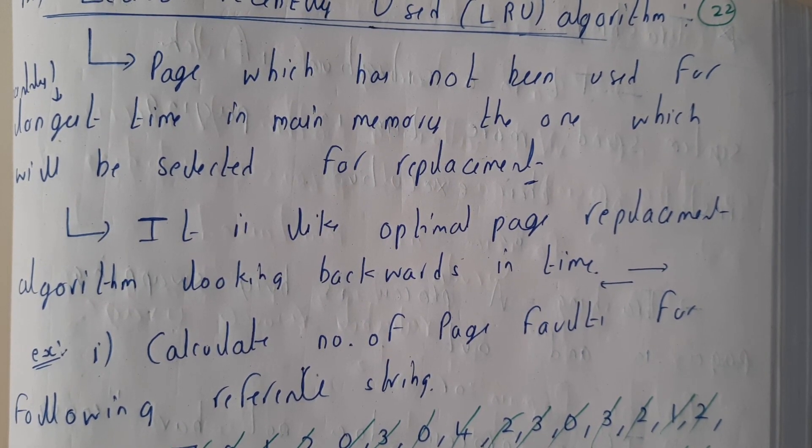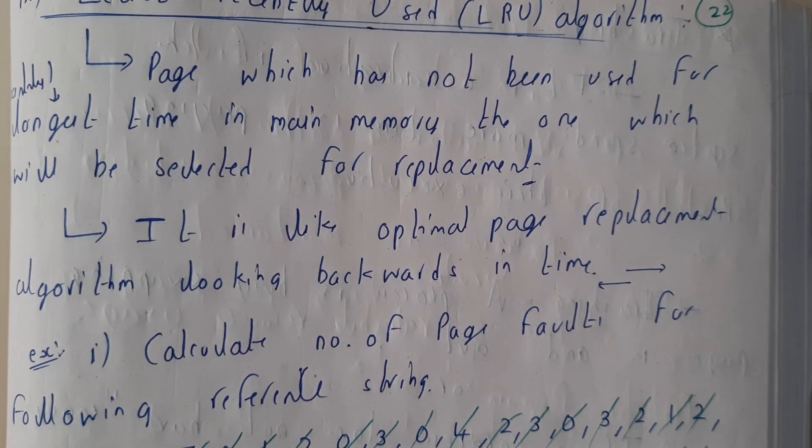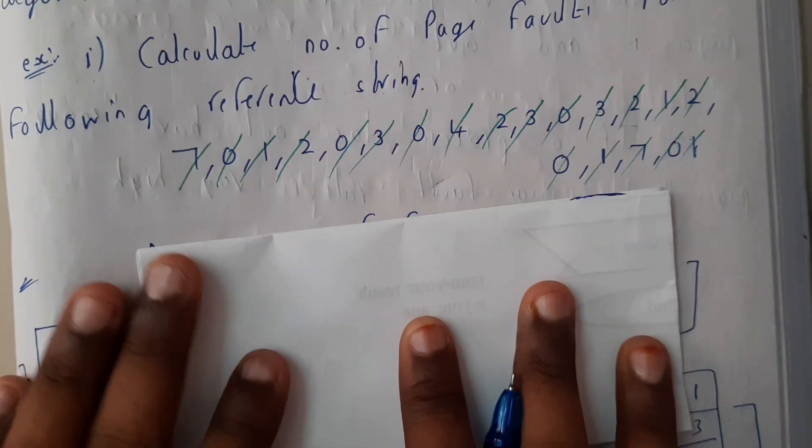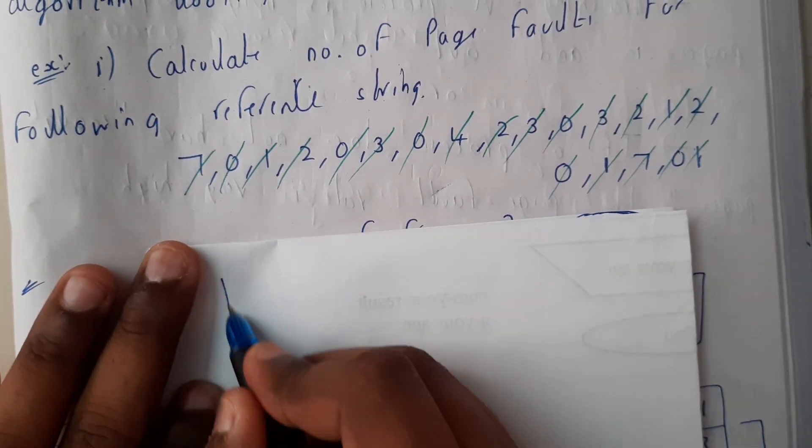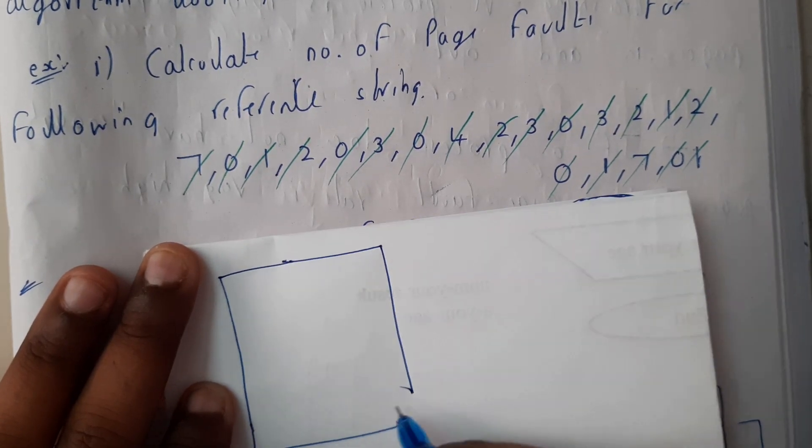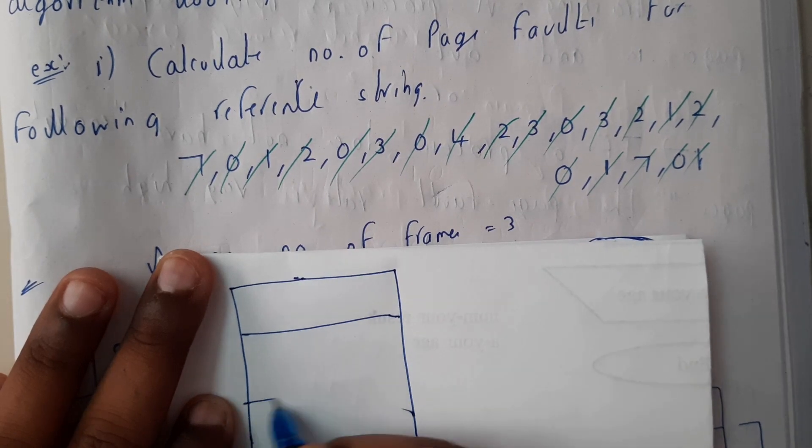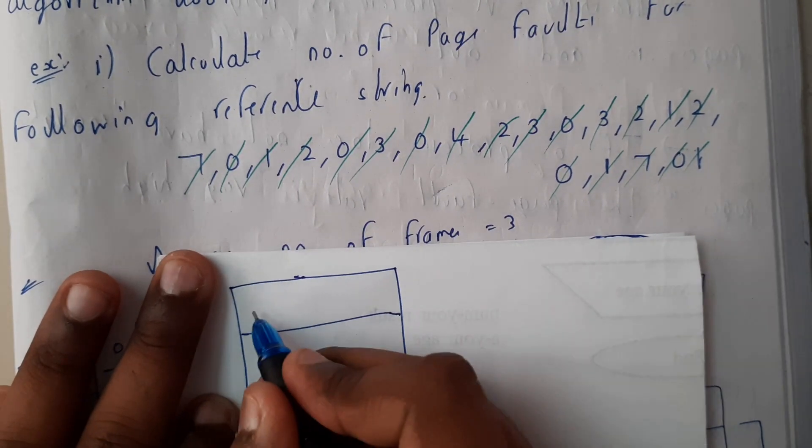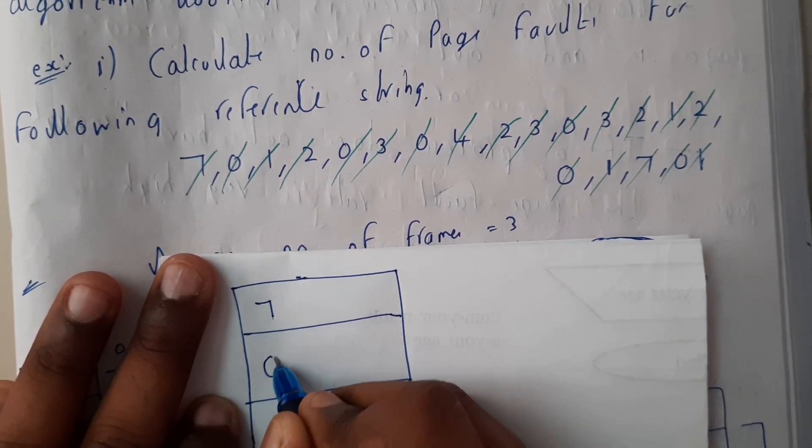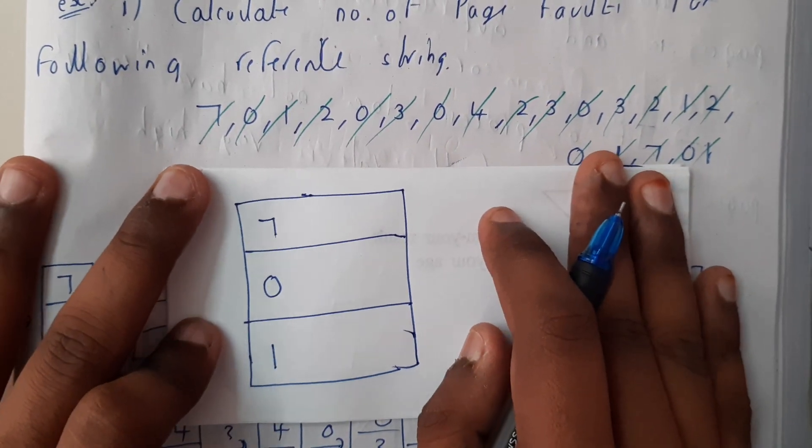Now this is a small problem which is given. I'll be drawing a table. It's a simple process, just for rough work you can do this. Seven, zero, and one are the initial things. I'll be just keeping it clearly.